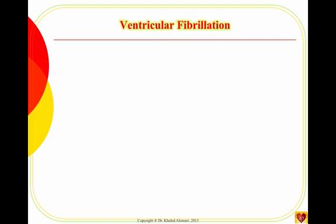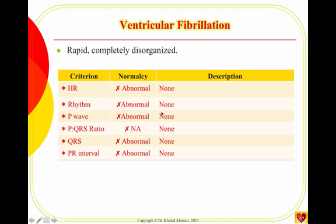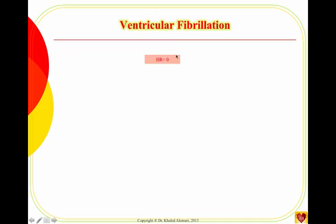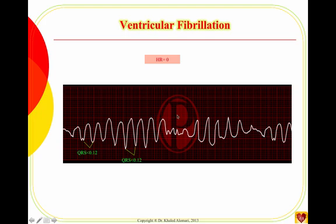VFIB — just by the shape of it, you can identify it. There are coarse and fine VFIB; it doesn't matter which — it is completely disorganized and none of the criteria applies. In VFIB, there is no heart rate and no pulse; the ventricles are fibrillating in a very chaotic, irregular manner with no correct cardiac output. In VTAC there are two types: VTAC with pulse, where there is still correct output, and pulseless VTAC — and the treatment between these two is very different.